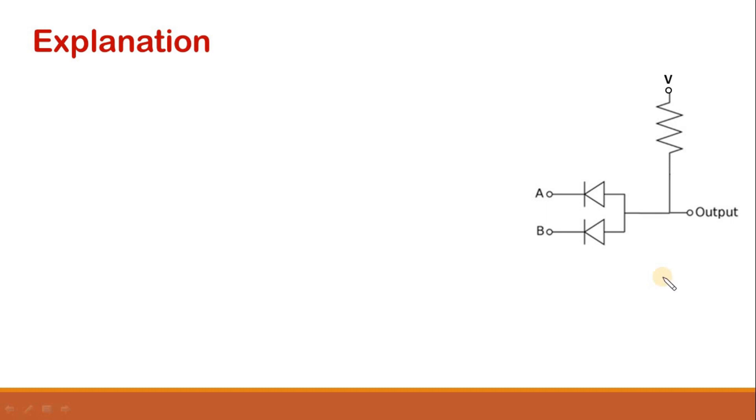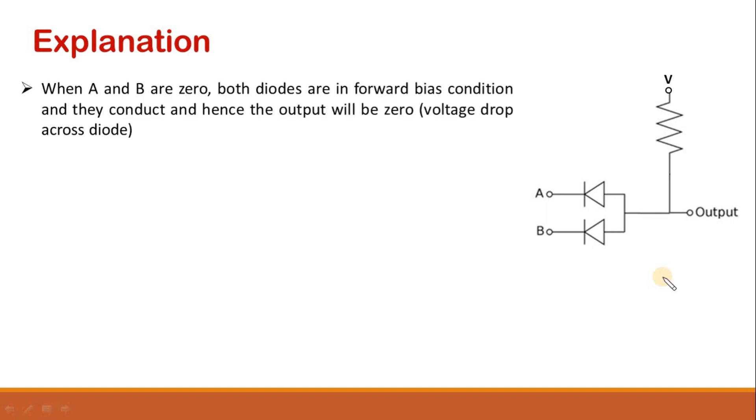When both A and B are in 0 state, that is if you apply 0 volt across both A and B, then both diodes are in the forward bias condition. As a result, they will conduct. Once they conduct, we will get the voltage drop across the diode as output voltage. When the diode is in the conducting state, there is a certain drop which we call forward bias breakdown voltage, which is approximately 0.6 to 0.7 volt.